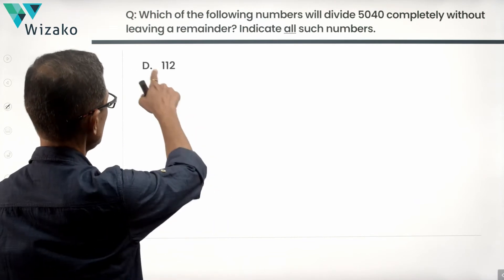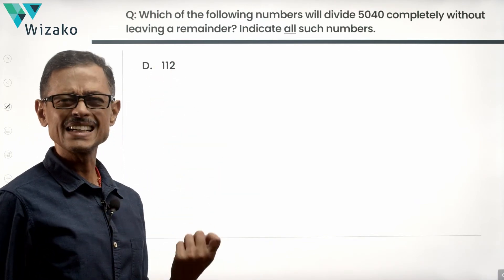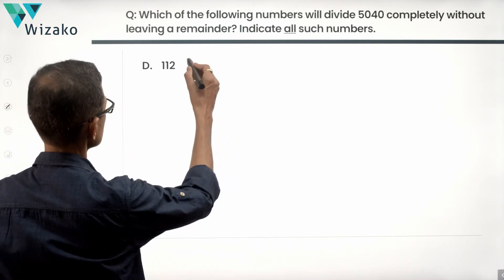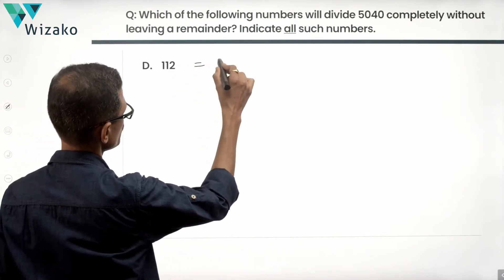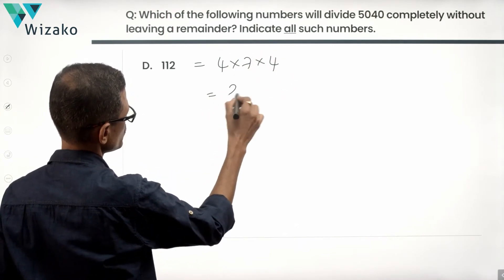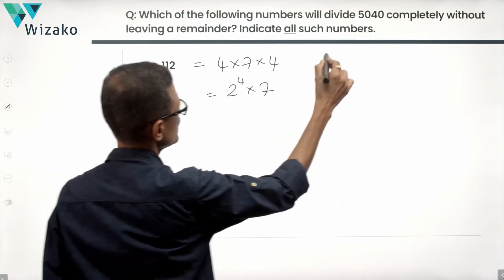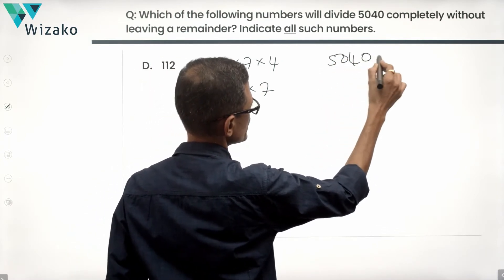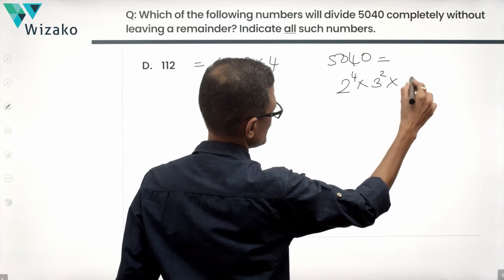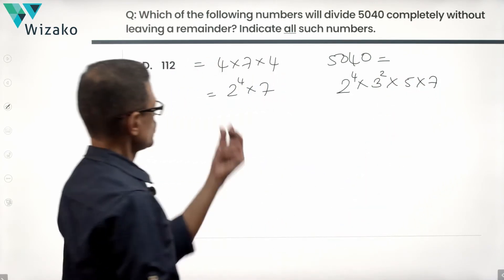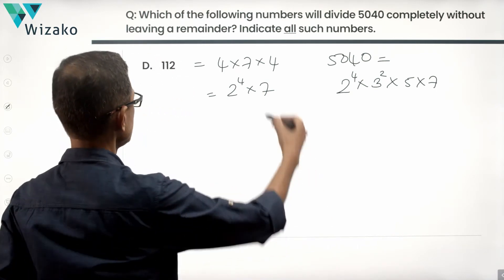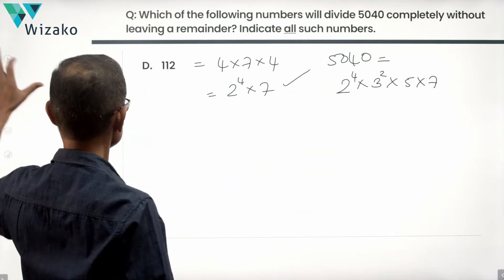Move on to answer option D. 112. 100 is divisible by 4. 112 will also be divisible by 4. So this is equal to 28 times 4, which is 4 into 7 into 4. 16 can be written as 2 raised to the power of 4 into 7. We know our 5040 is equal to 2 raised to the power of 4 times 3 square times 5 times 7. 2 power 4, yes, certainly present. 7, certainly present. So 112 will also divide this number. So D is also one of the answer options.